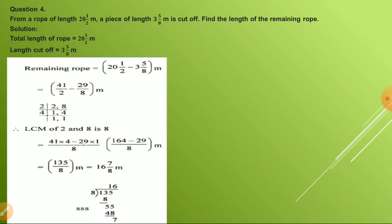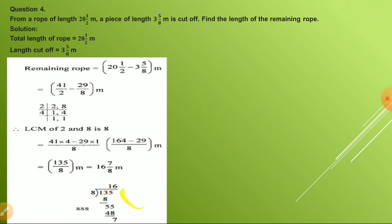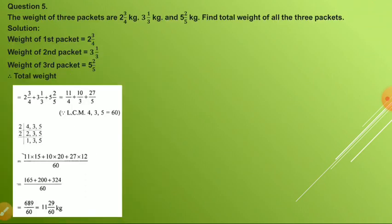Question number four: From a rope of length 20 whole 1/2 meters, a piece of length 3 whole 5/8 meters is cut off. Find the length of the remaining rope. This is similar to question number 2 — we find the remaining part after cutting. Remaining rope equals total minus cut-off length: 20 whole 1/2 minus 3 whole 5/8, which is 41/2 minus 29/8. Using LCM, you will get 16 whole 7/8 meters.